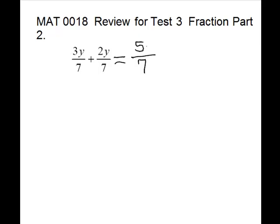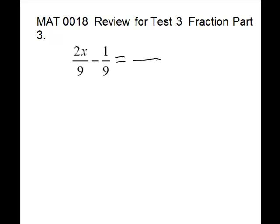Problem 2. Again, we are adding fractions. We make sure we have a common denominator — we do, so we keep it and put it in the answer. Combine on the numerator. These are like terms; they both have a y, so we work with the coefficients: 3 and 2. They are both positive, so we add and keep it positive — one copy of the variable.